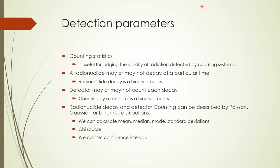Based on what we covered on the previous slides, we can learn about counting statistics. Because the decay of a radionuclide and its detection are random in nature, the measurements are subject to random error. Counting statistics allow us to judge the validity and accuracy of the measurements our detectors produce. When it comes to the decay of a radionuclide, there are two possibilities: it may decay or it may not decay in a particular time. When the radionuclide decays, for different reasons, the detector may or may not count the decay.